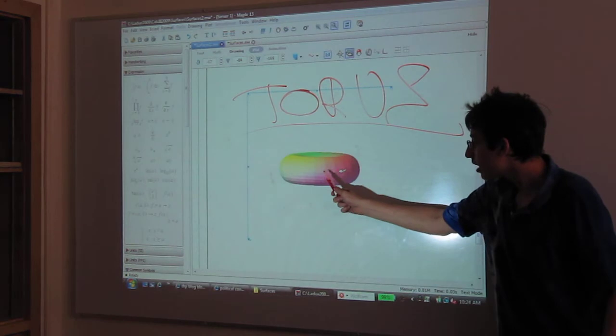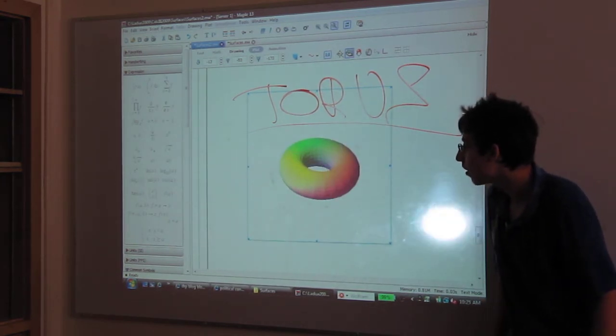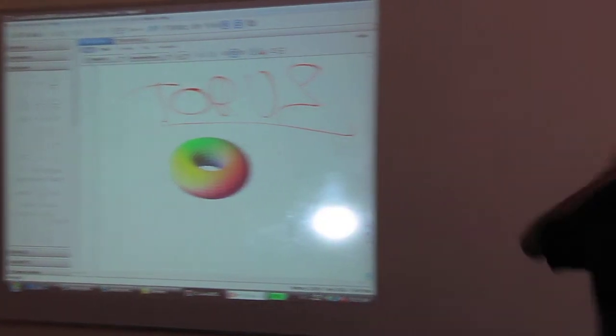The Torus, as we see, looks sort of like a donut, which is why some people call it the donut curve. I am not one of those people.